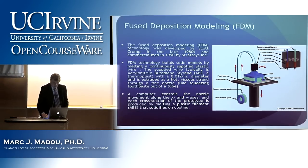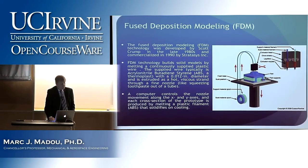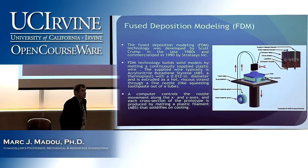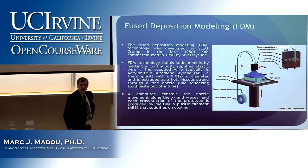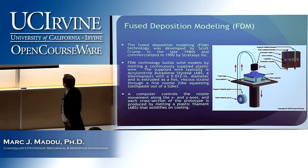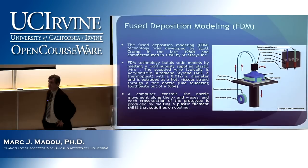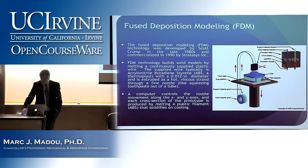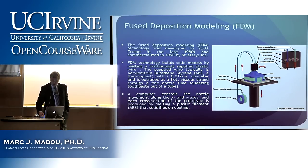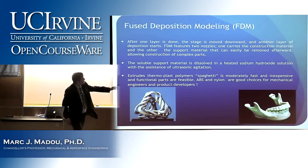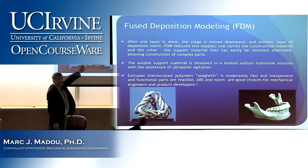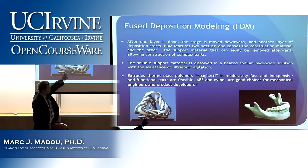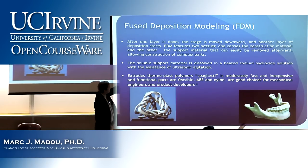Do you remember why there are two wires in the FDM machine? Support material — one of the two wires, the white one, you can just etch out. So you can have holes and much more complex shapes than if you only have building material. Here are some example structures. Try to make this with CNC machining — it would be impossible, or it would take a tremendous amount of time.